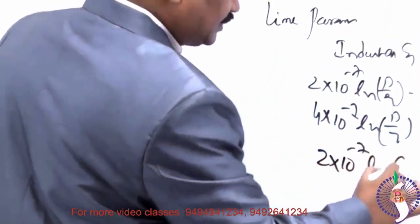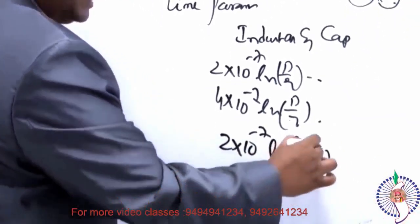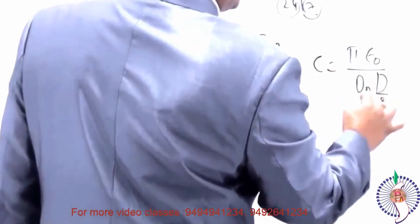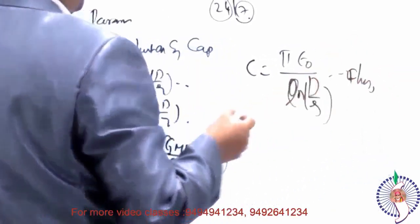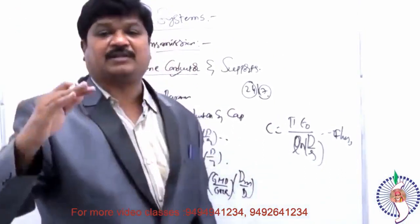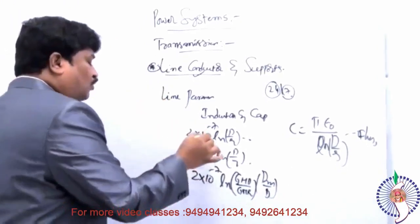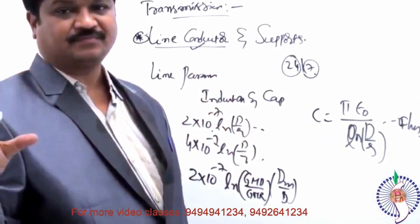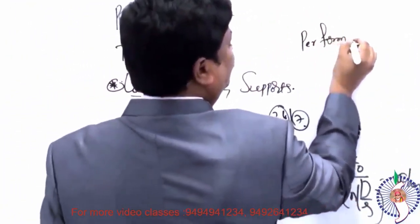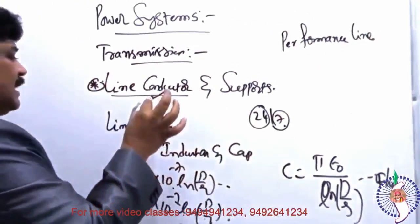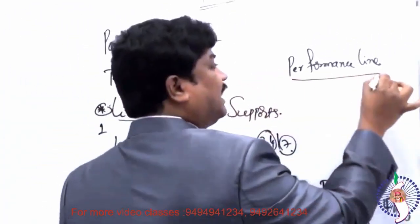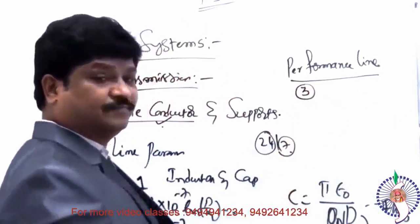Performance of transmission lines is very important — at least three questions can be expected here. Know the primary and secondary constants of a transmission line. Surge impedance Z₀ = √(L/C): its value in underground cables versus overhead lines, and surge loading = VR² / ZC. Then short, medium, and long transmission lines with their ABCD constants. In a recent DISCUM exam, the question asked: what is the condition for both symmetry and reciprocity? Condition for reciprocity: AD - BC = 1. Condition for symmetry: A = D. Combined: A = √(1 + BC).